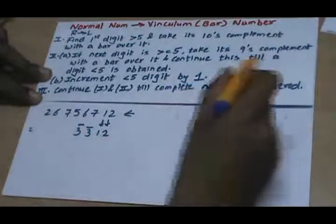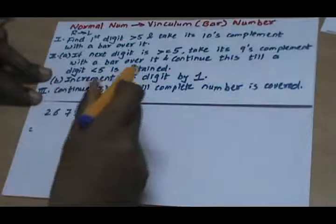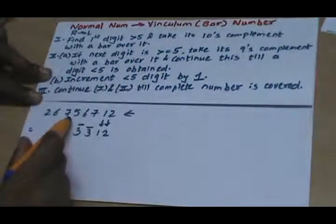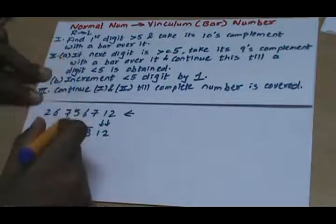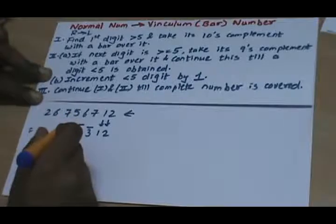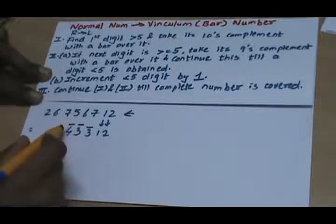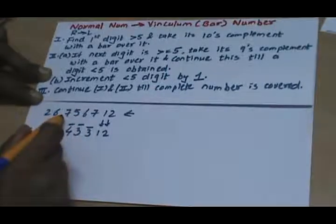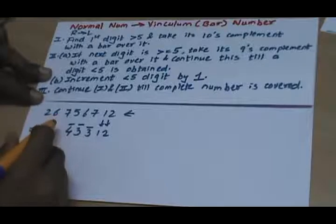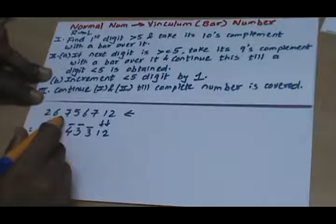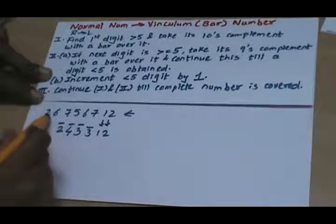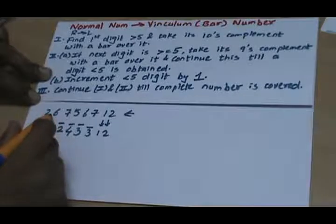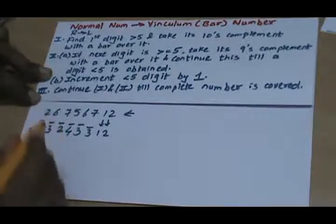We continue this till a digit less than 5 is obtained. The next digit is 5, which is not less than 5, so we repeat step 2 — nines complement of 5 gives 4-bar. The next digit is again greater than 5, so we take nines complement of 7, which gives 2-bar. The next digit is again greater than 5, so we take its nines complement, which gives 3-bar.